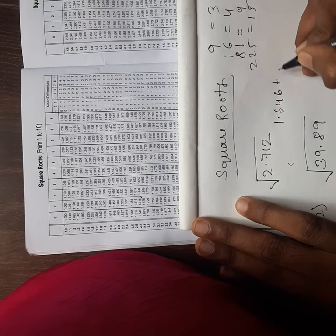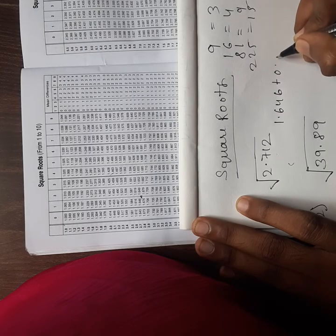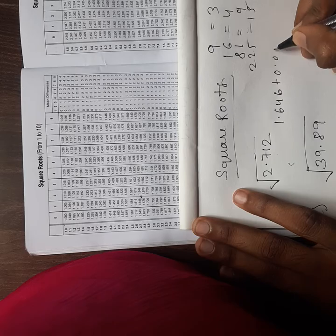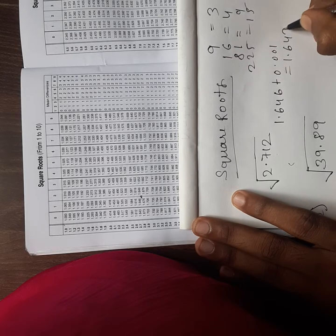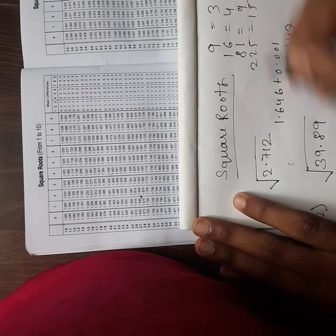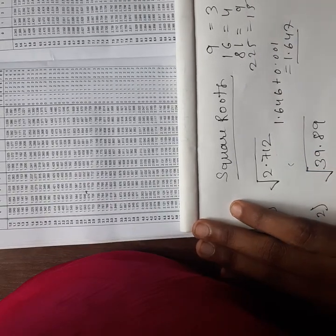Actually, 1.646 and in mean difference column 1, I get 0.001. So the total will be 1.647. This is my square root of 2.71.